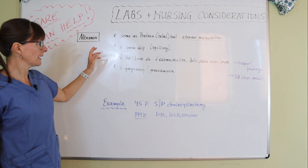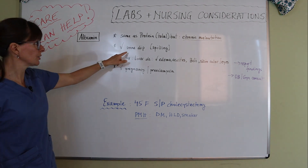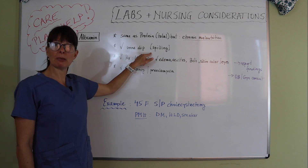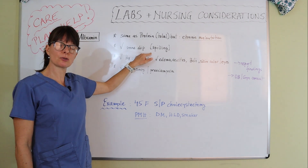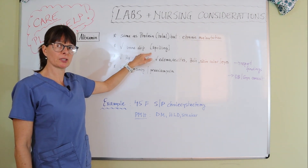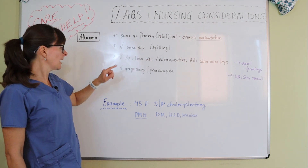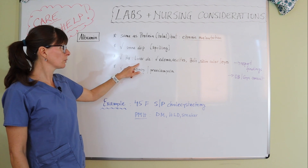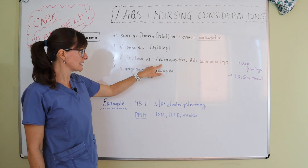If albumin shows up on a lab result and it is low, we want to check a urine dip, a urinalysis, to see if protein is spilling in the urine — meaning that protein is seeping through the filtration membrane of the kidneys. If that's the case, we need to look into the kidneys.